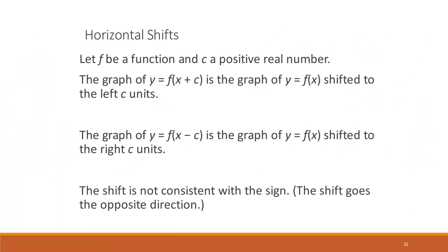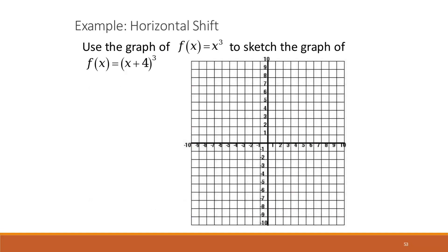So the example we just did talks about horizontal shifts as our transformations. And again, it is counterintuitive: if it's plus c, you're moving to the left c units; if it's minus c, you're moving to the right c units. It's kind of the opposite of what you might normally think. Since we already did one together, I'm going to give you the opportunity to do this one, and then you can check yourself against the annotated notes in Blackboard.